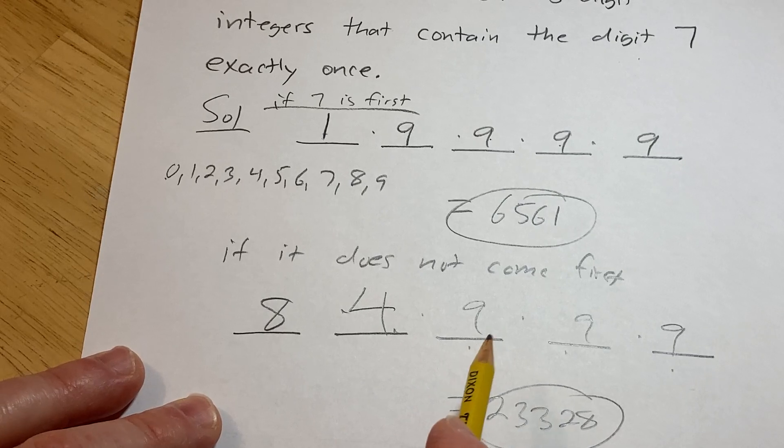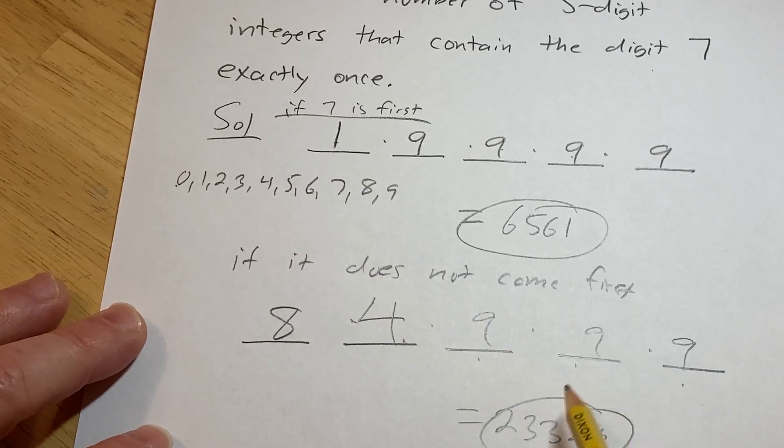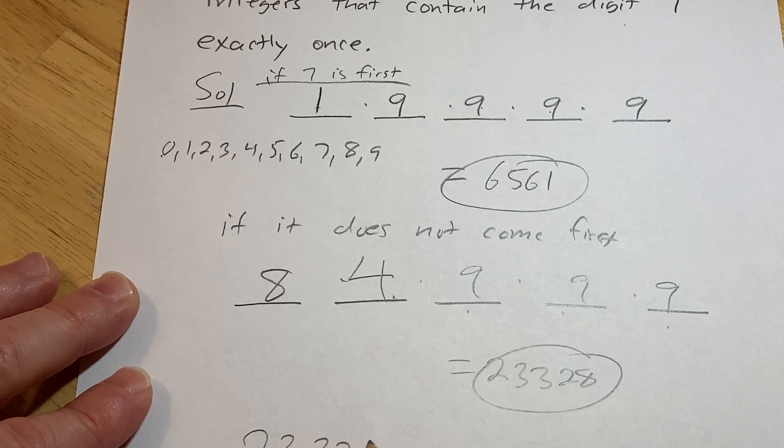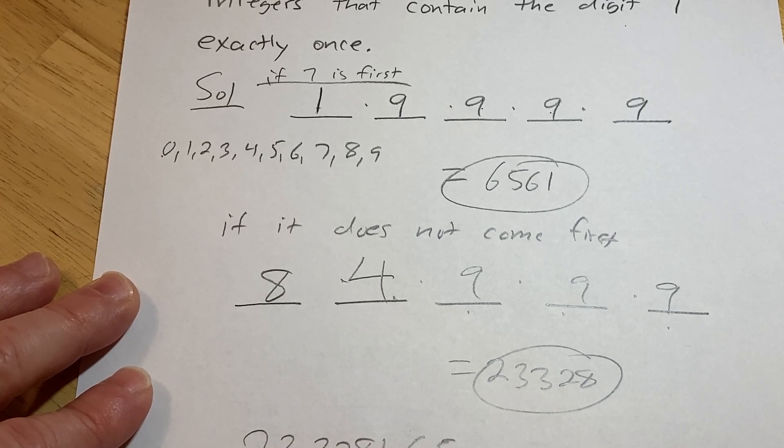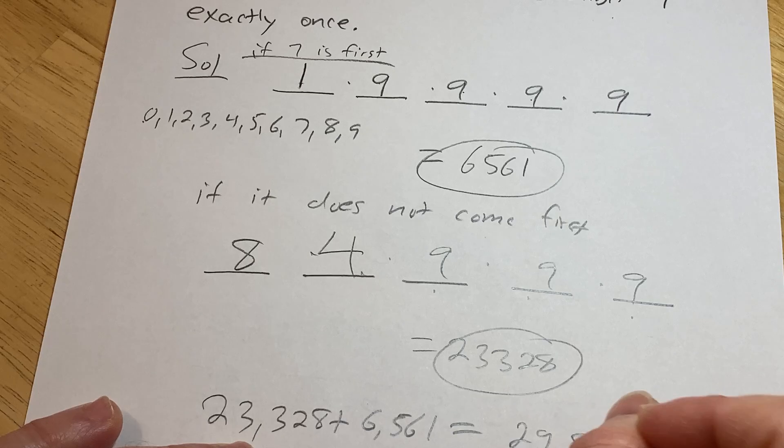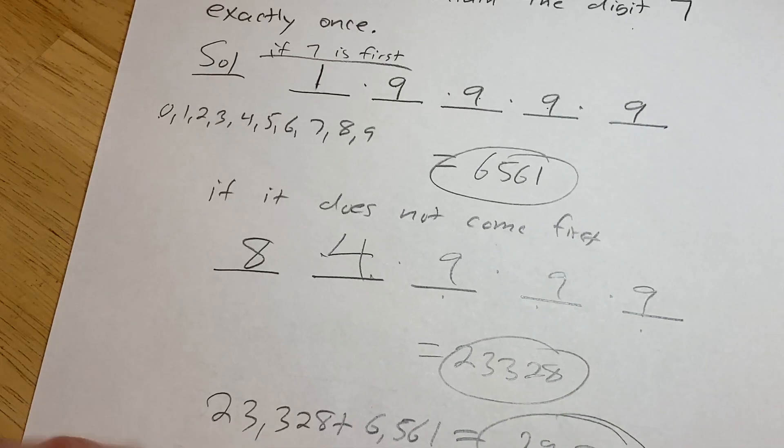So the total number of five-digit integers that contain the digit 7 exactly once would be the sum. So it'd be 23,328 plus 6,561, which is going to be 29,889 possibilities.